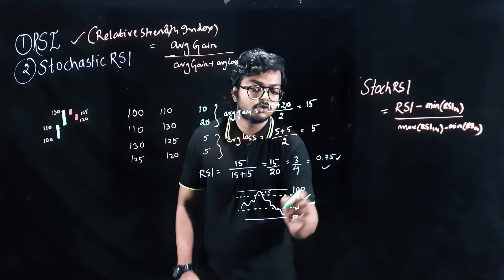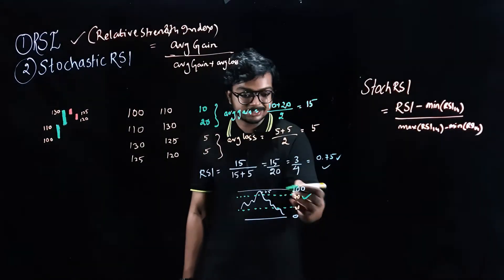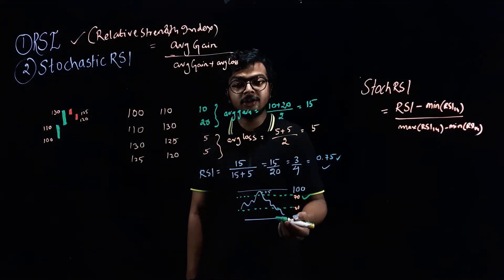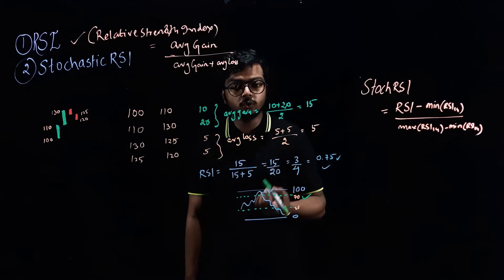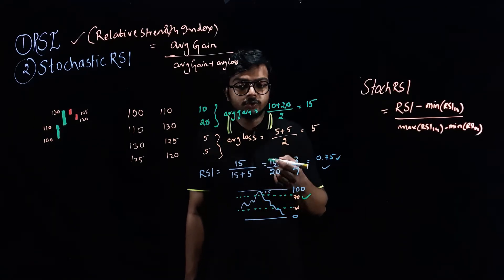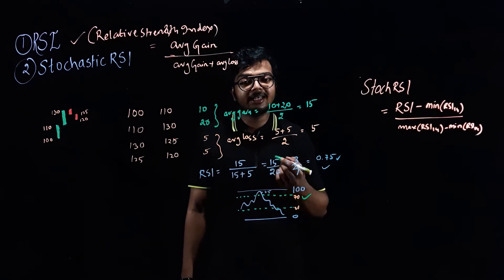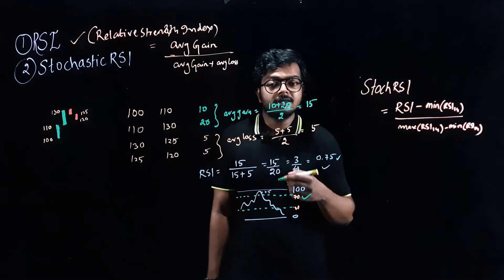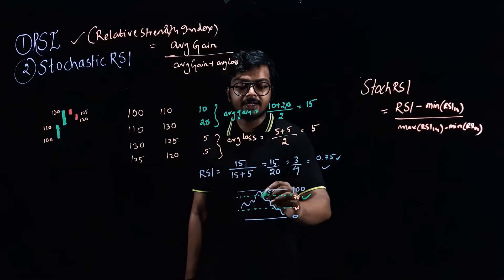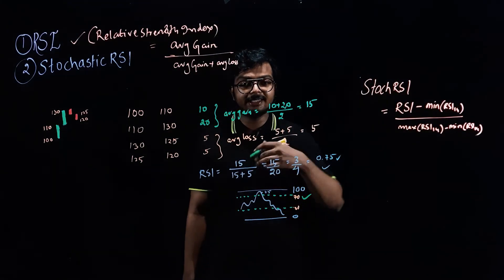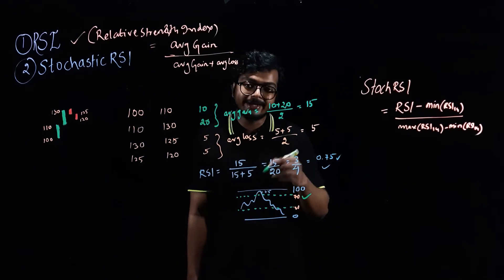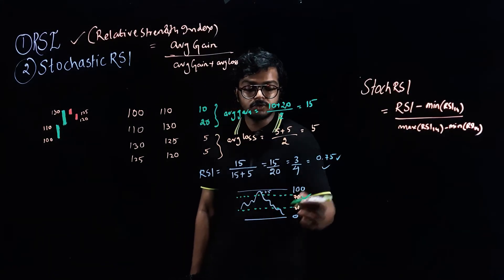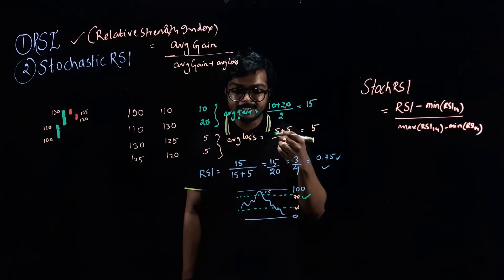So if the RSI crosses the 70 mark, generally it is said that this is in overbought zone. So what you can do here, you should sell your assets or you can take a short position. So RSI above 70 denotes that it is in overbought zone and it might fall down. The price might fall down now. So this is what RSI above 70 indicates.